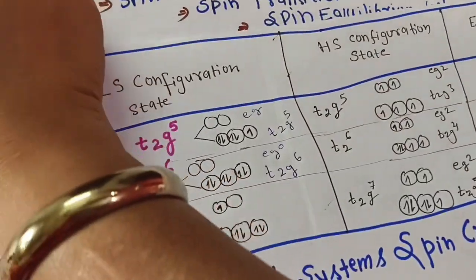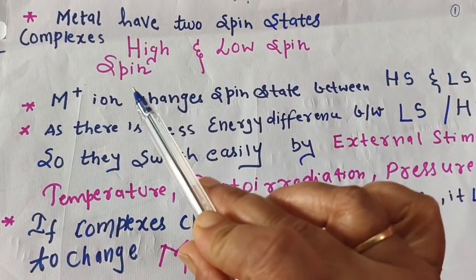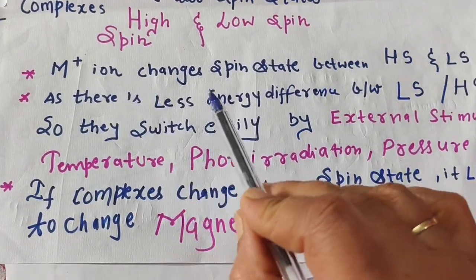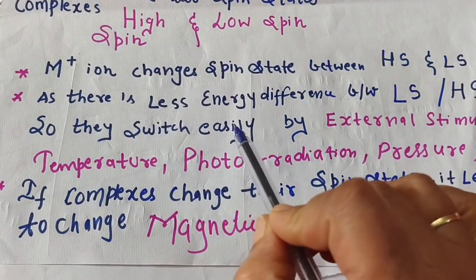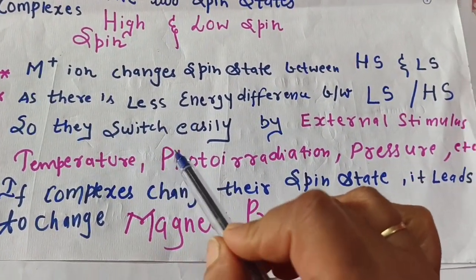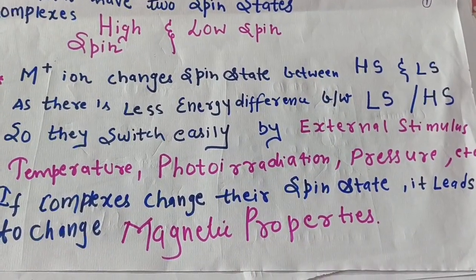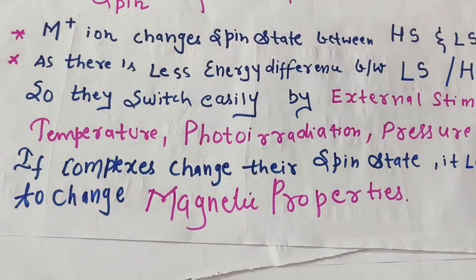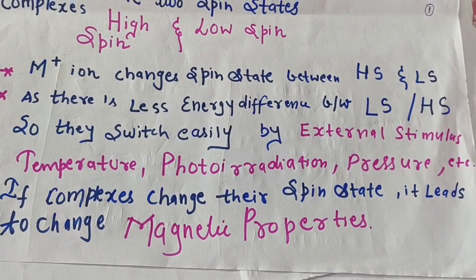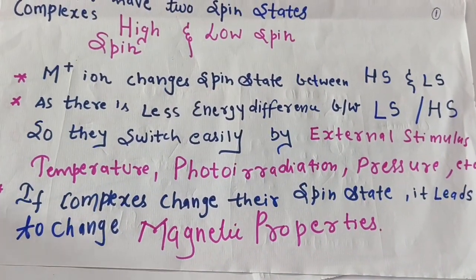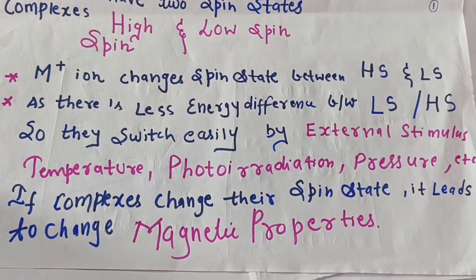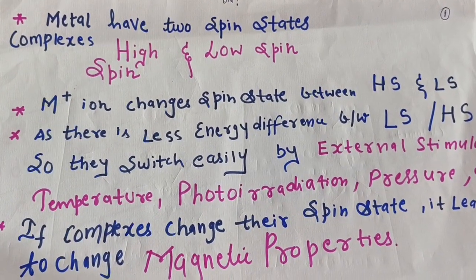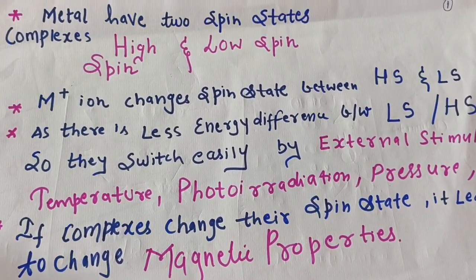All metal complexes have two spin states — high spin or low spin. When metal ions switch between these states, it is because there is a small energy difference between high spin and low spin. Any external stimulus like temperature, photo-radiation, or pressure can cause the switch. Changing spin state directly affects the magnetic properties of the complex.